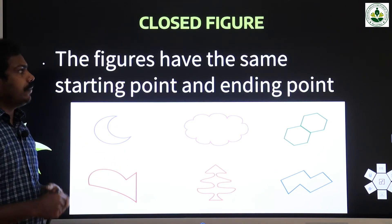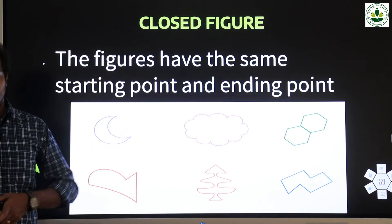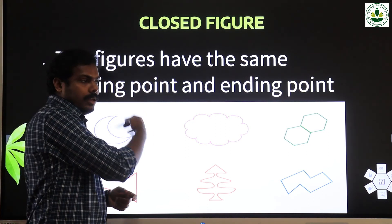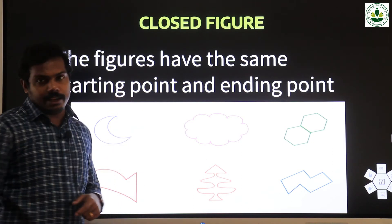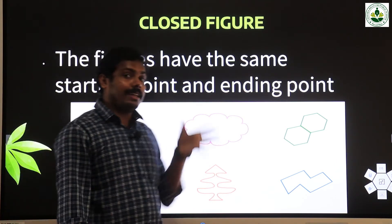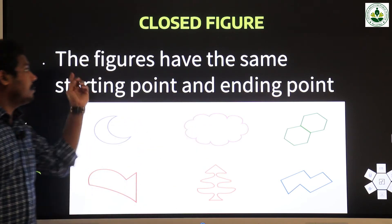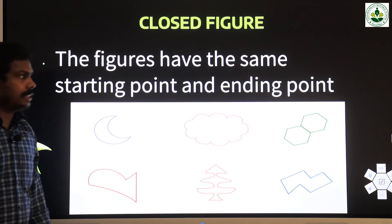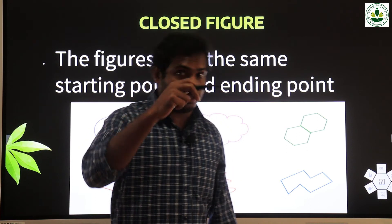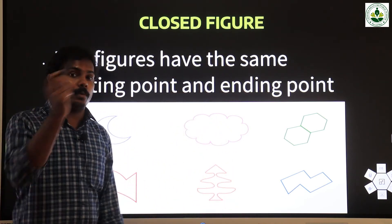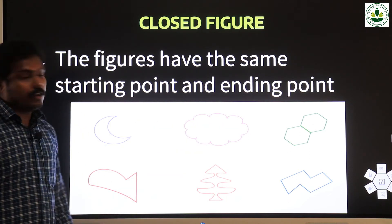What is a closed figure? The figures have the same starting point and ending point. When we draw the figure, you see the first two pictures have the same starting point and ending point. So that type of figure is called a closed figure.